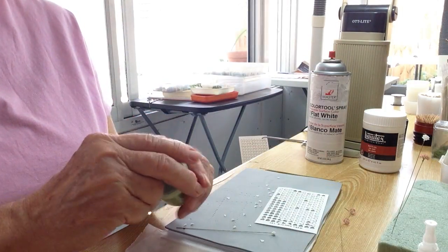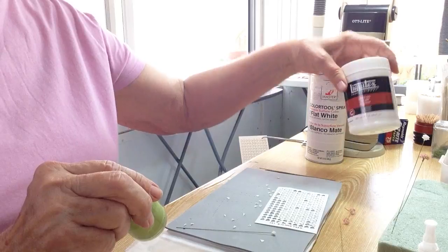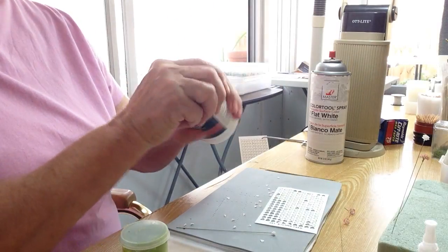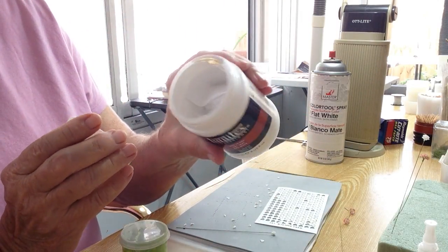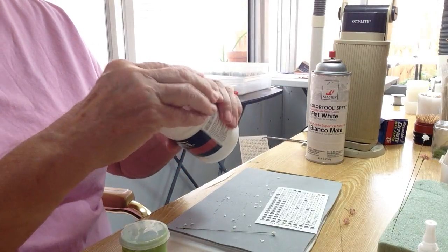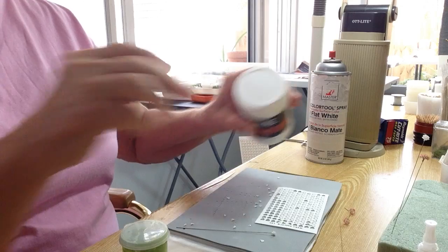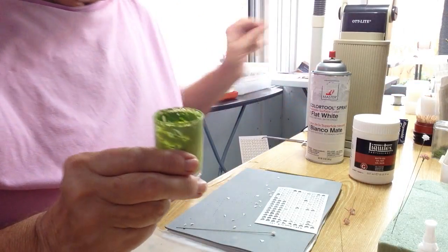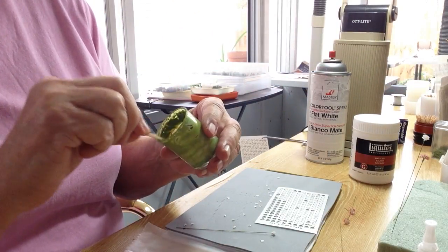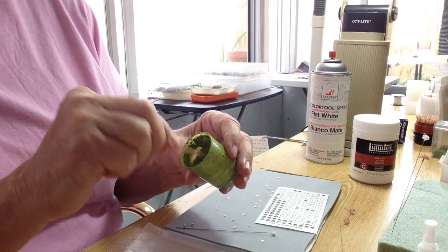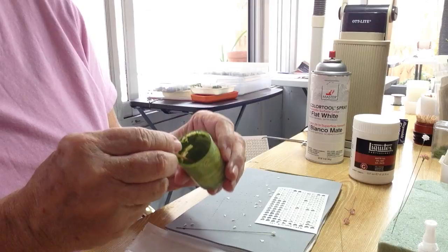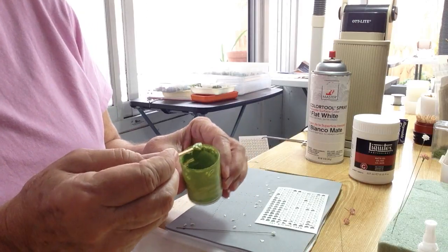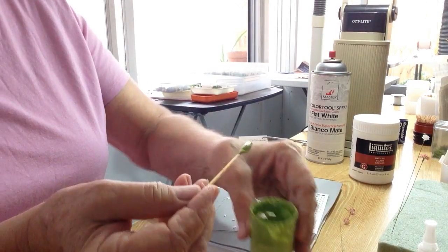Then the next thing that I did was I took some gel medium, you'll see me use this a lot. When you open the jar, it looks like cold cream, the old-fashioned cold cream, and you scoop some of it out and put it in another container with this paint. I used a leaf green.